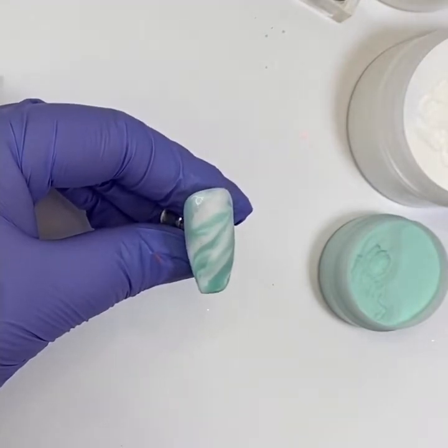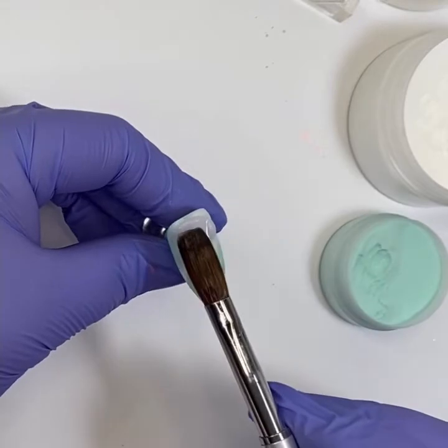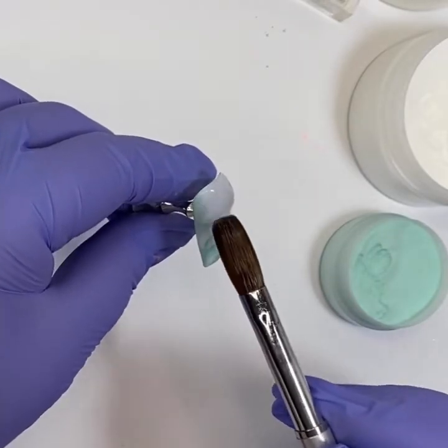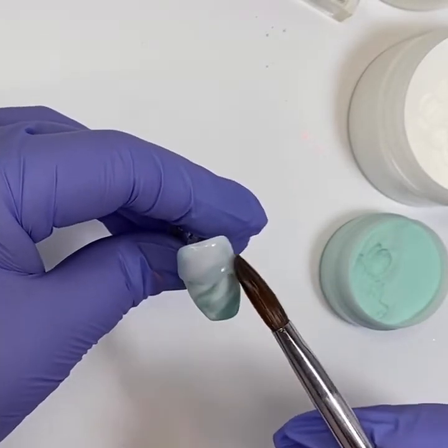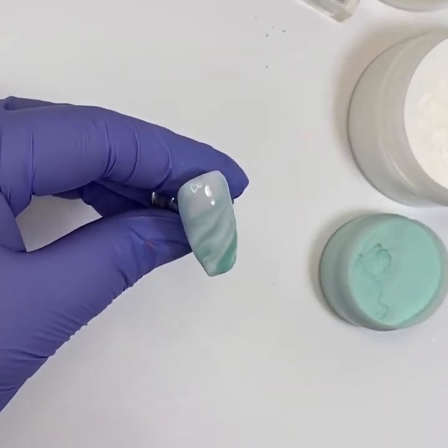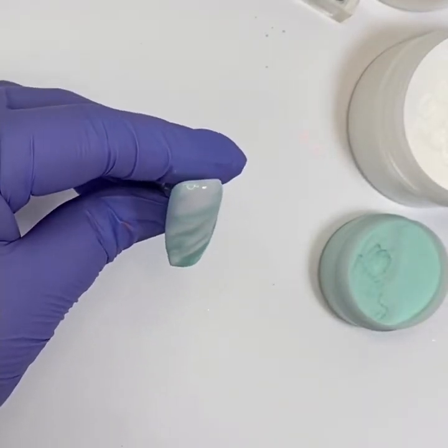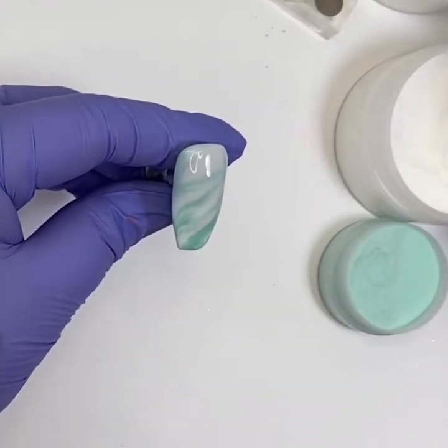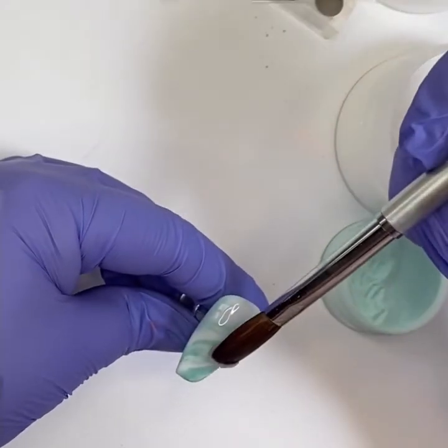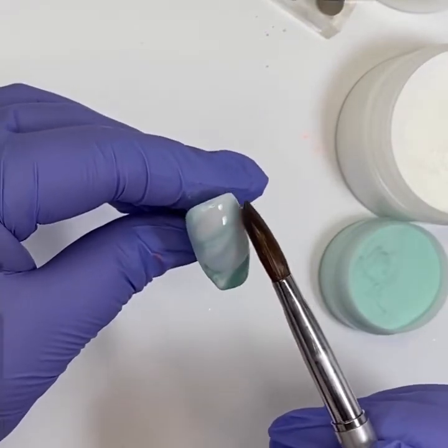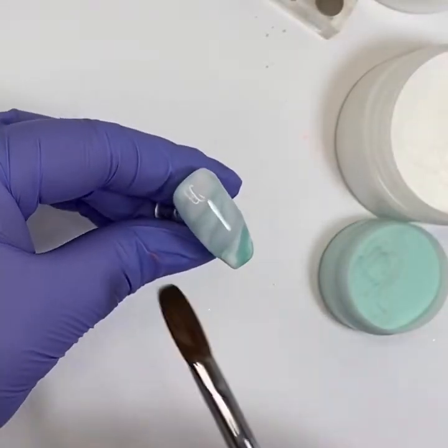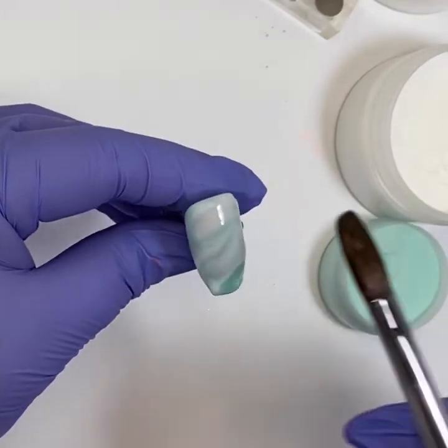But that's looking all right. I'm pretty happy with that. I'm going to cap it, and then it will be ready for filing. When I'm capping glitters and marbles, obviously the surface is fairly uneven. So I try and make sure that my clear acrylic is slightly wetter than I would normally use it. It just helps it to flow over. And I have to say, the Glittermix acrylic system is fantastic. There's a fantastic self-leveling property, so it just kind of flows into all those little cracks and crevices, and you end up with a really lovely, smooth, even nail.